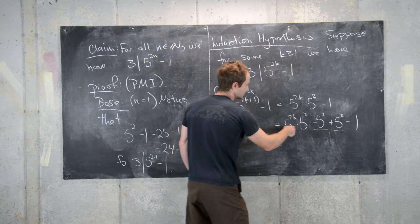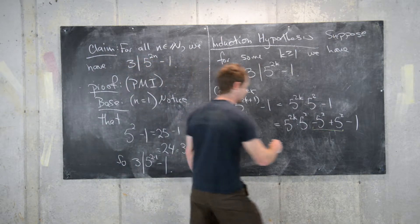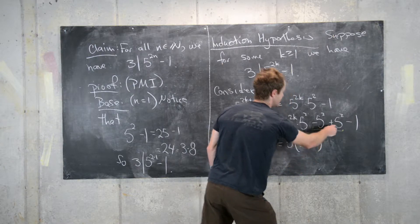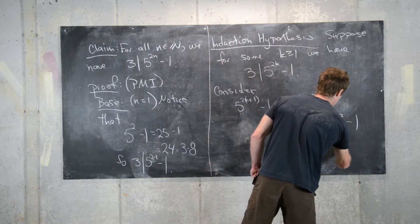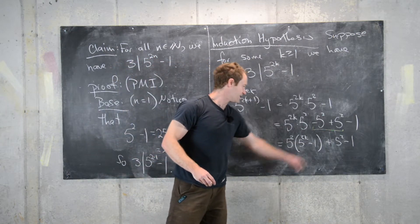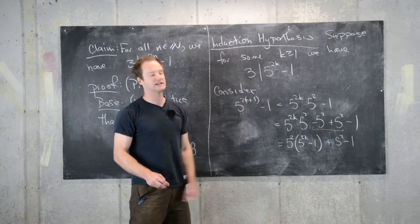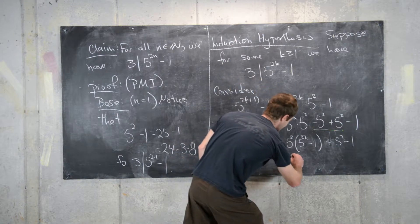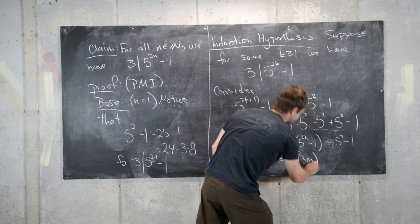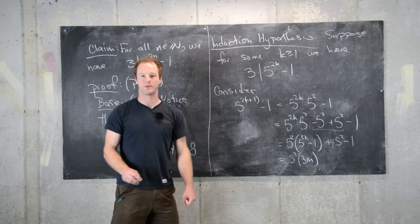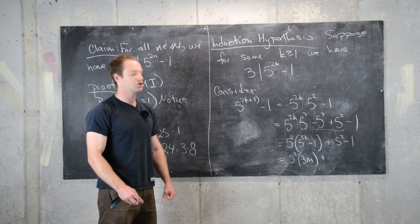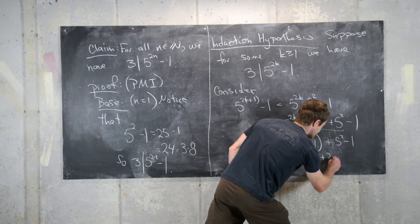The first two terms have a common factor of five squared, so we factor that out: five squared times five to the two k minus one, and the second two terms we write as five squared minus one. From the induction hypothesis, three divides five to the two k minus one, so we write it as five squared times three times m for some integer m. From the base case, five squared minus one is twenty-four, which is three times eight.